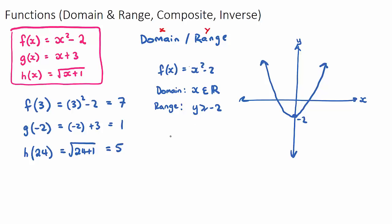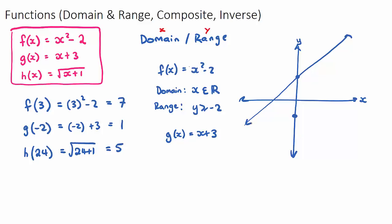For g(x) = x + 3, this is a straight line with y-intercept at 3. A linear function goes left and right forever and up and down forever, so both the domain and range are all real numbers: x ∈ ℝ and y ∈ ℝ.